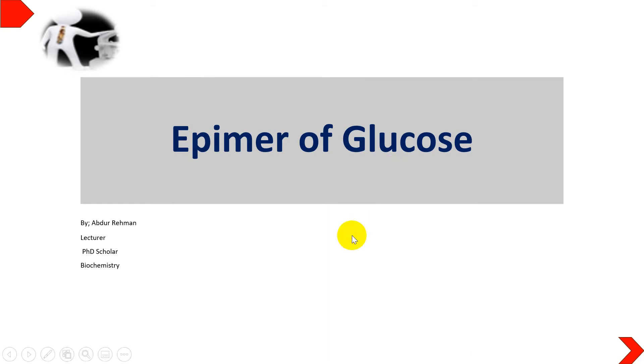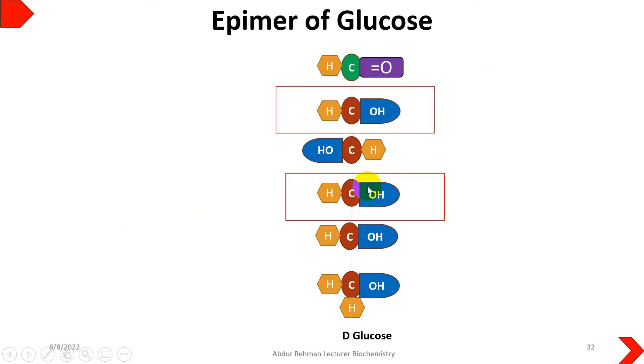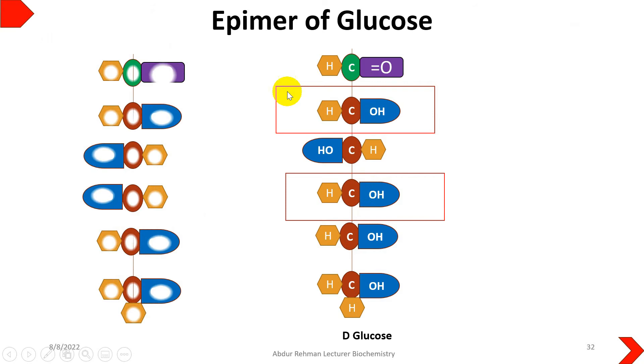Welcome to my YouTube channel, this is Abdul Rahman and today we will discuss epimers of glucose. When two monosaccharides are different from each other in their configuration at a single specific carbon apart from the anomeric carbon, these